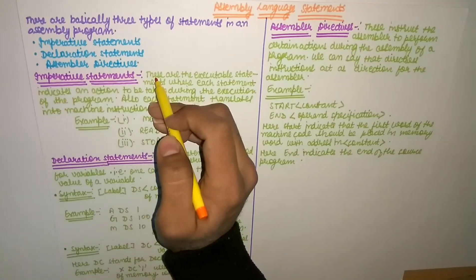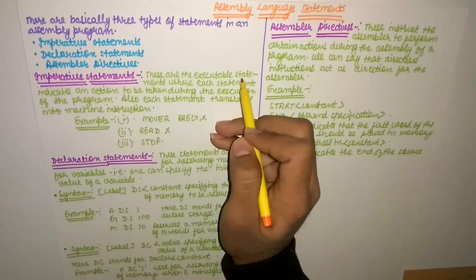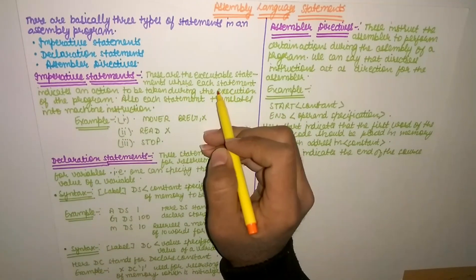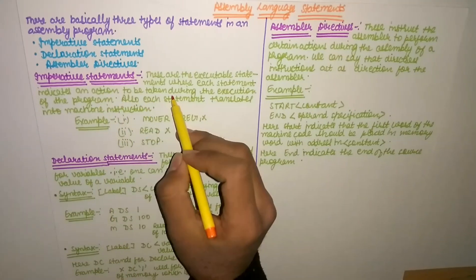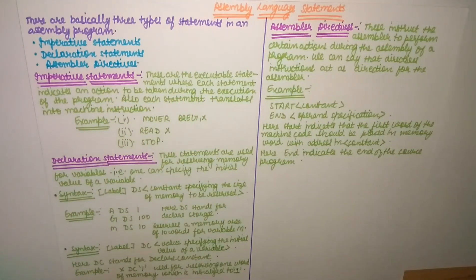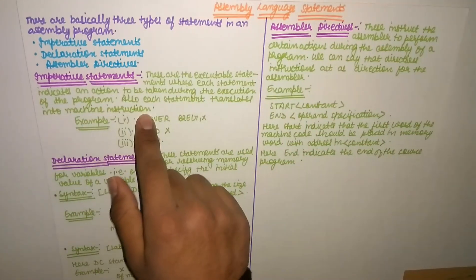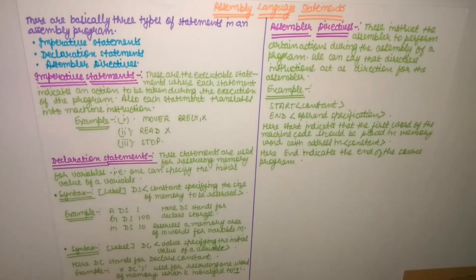First we will learn about imperative statements. These are the executable statements where each statement indicates an action to be taken during the execution of a program. These are normal executable statements, where every statement tells you that the computer will perform which action when you execute these statements. Also, each statement translates into a machine instruction. Every statement is translated into machine instruction.